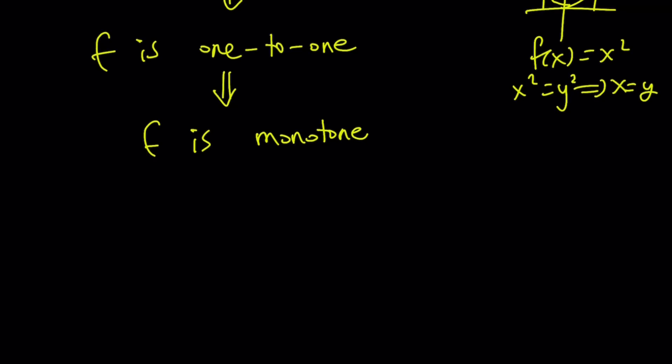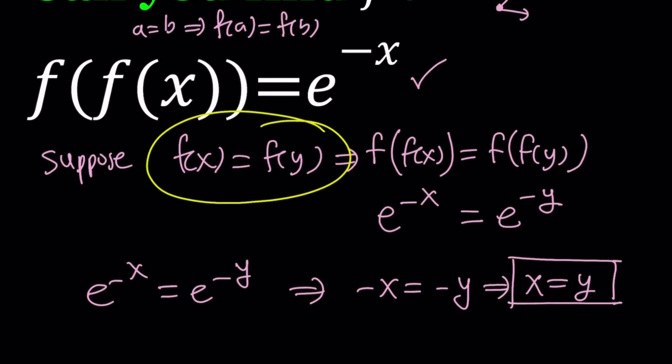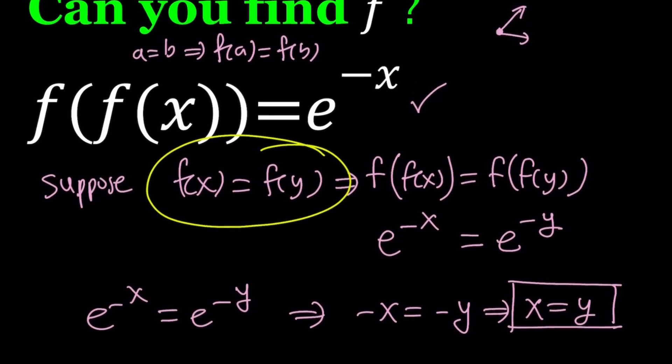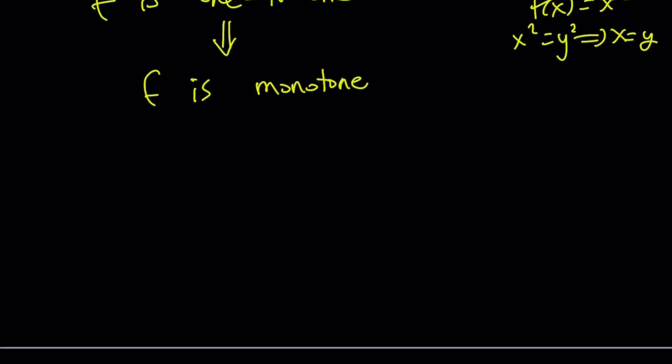Since f is 1-to-1, this basically means that f is monotone — either monotonically increasing or monotonically decreasing. We're going to look at both cases and see what happens. Our goal is to find a function whose composition with itself is e to the power negative x. At this point you can speculate about what f of x could look like. Is it e to the power something? Does it contain ln or something else? Anyways, f is monotone because it is 1-to-1.